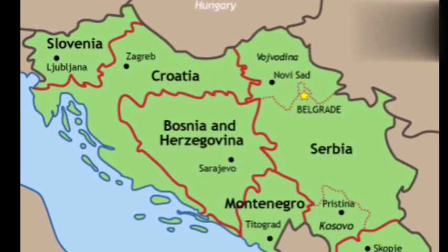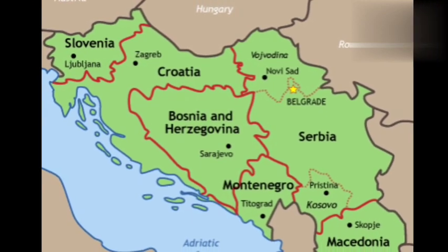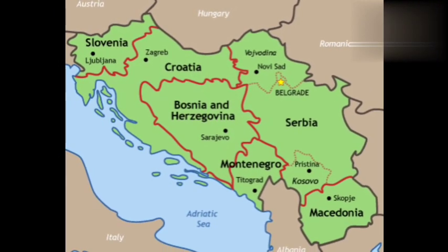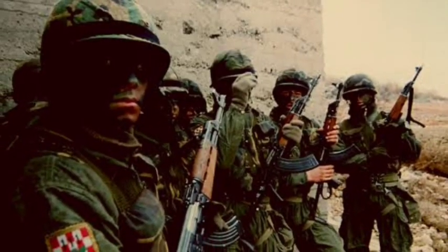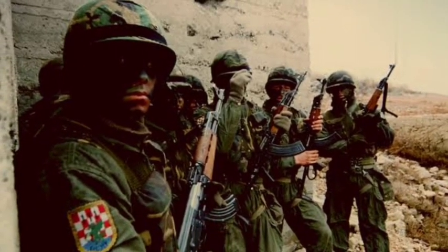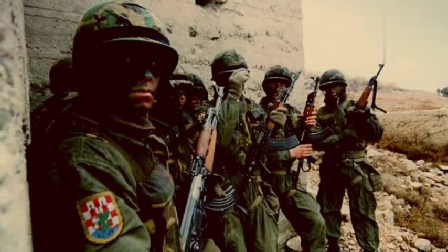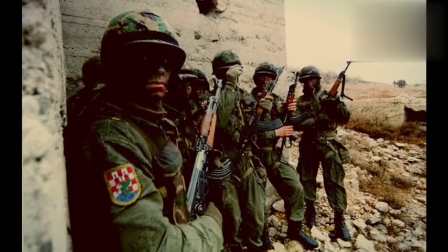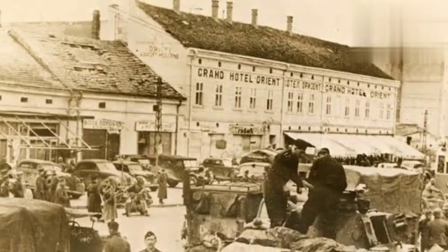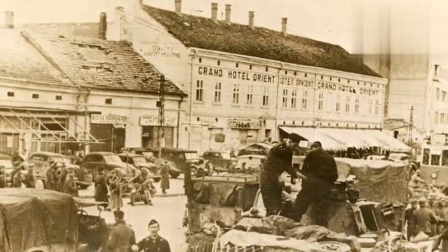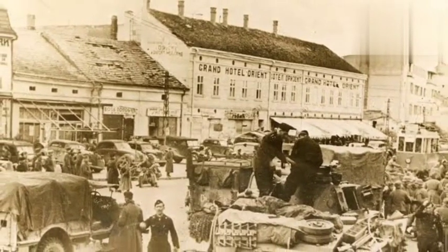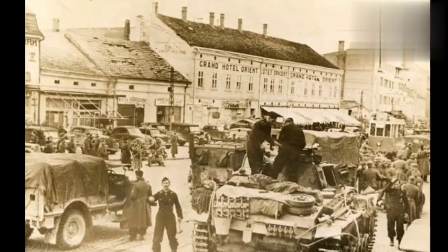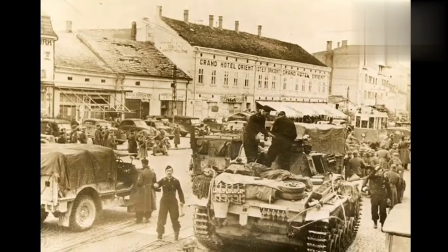One of the main causes of the war was the desire of some of the republics in Yugoslavia to secede from the federation. This was particularly true of Slovenia and Croatia, which declared independence in 1991. Serbia, under the leadership of Slobodan Milosevic, opposed the separation of these republics and sought to maintain control over them.